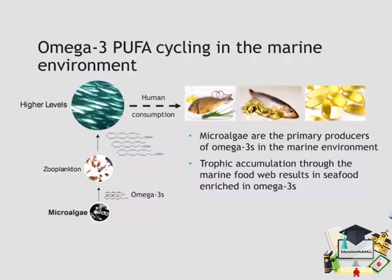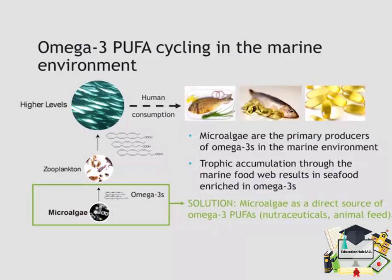As an alternative to harvesting fish for the specific purpose of turning them into omega-3 PUFA supplements, one solution is to grow microalgae in high-volume, high-density systems and use these microalgae as a direct source of omega-3s for the nutraceutical market, or directly as animal feed.